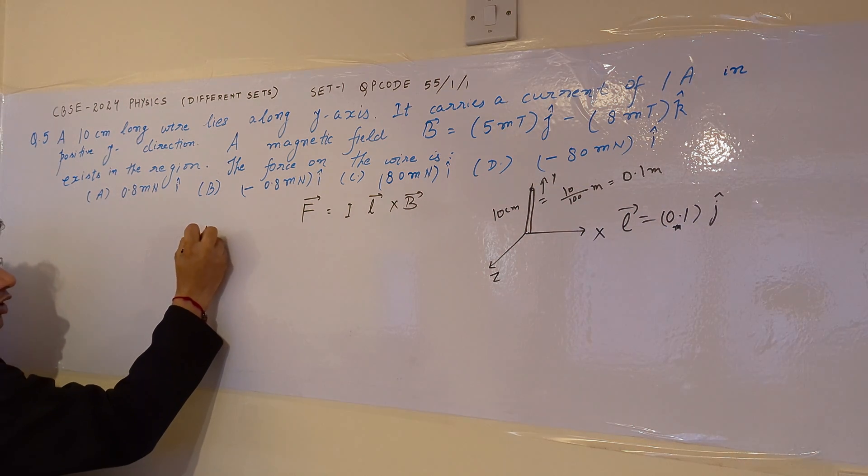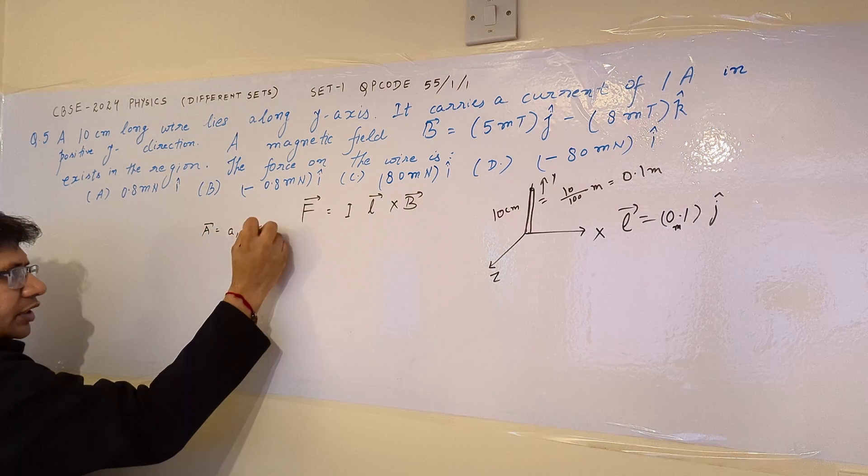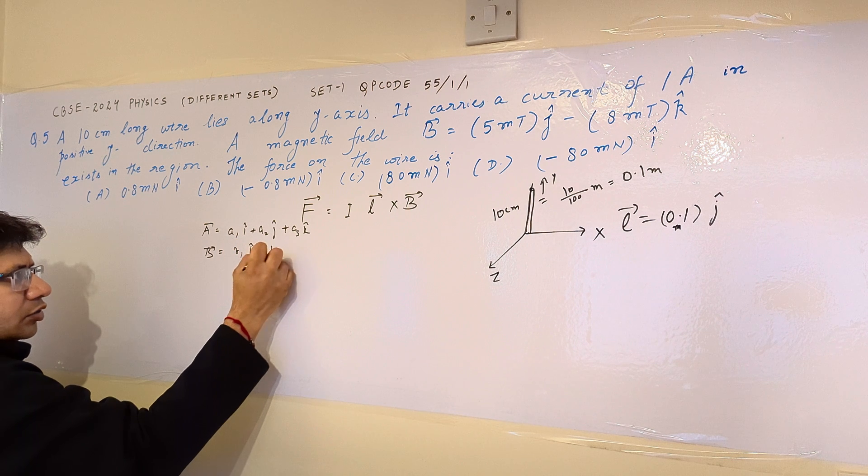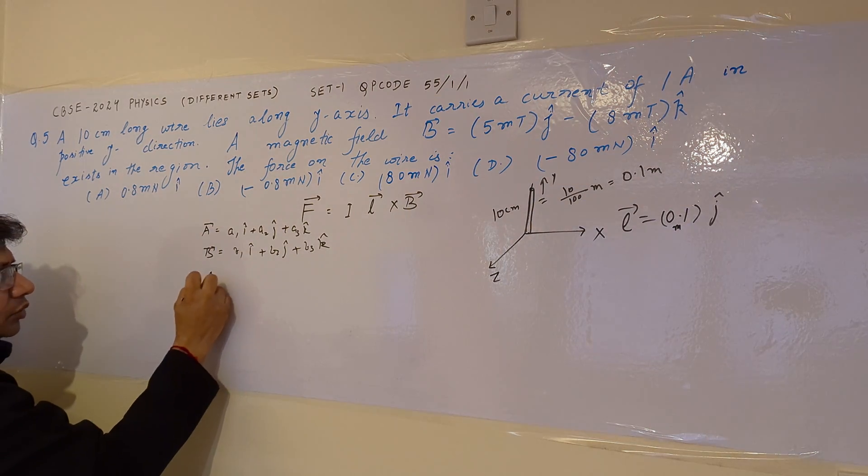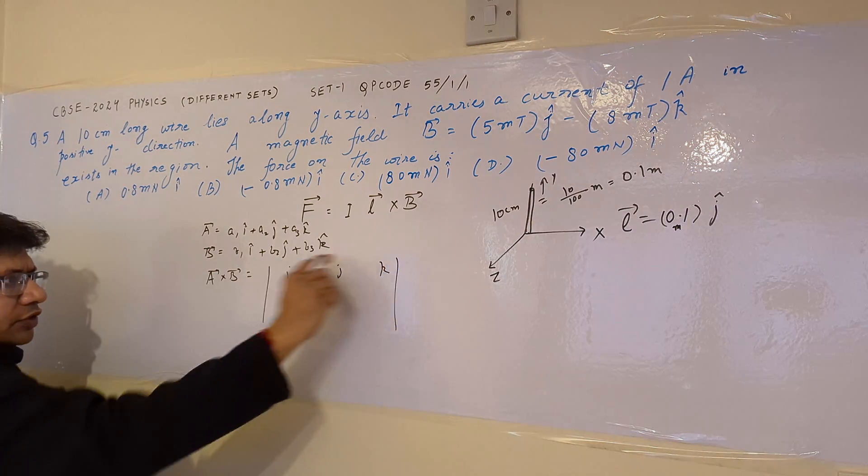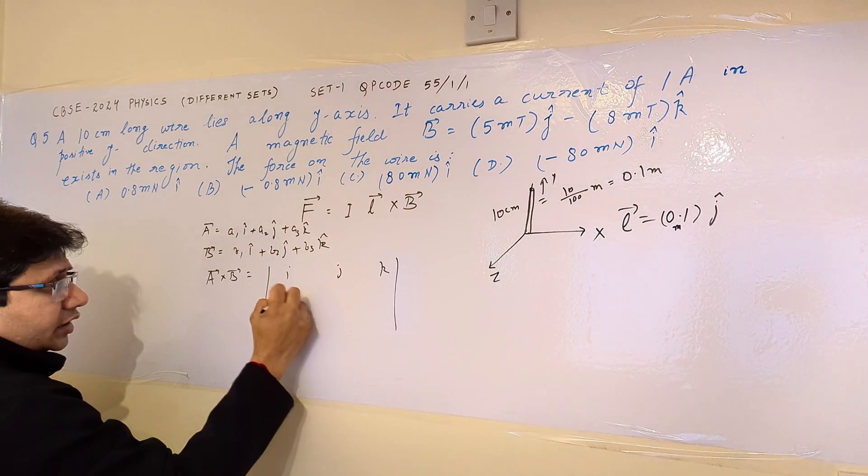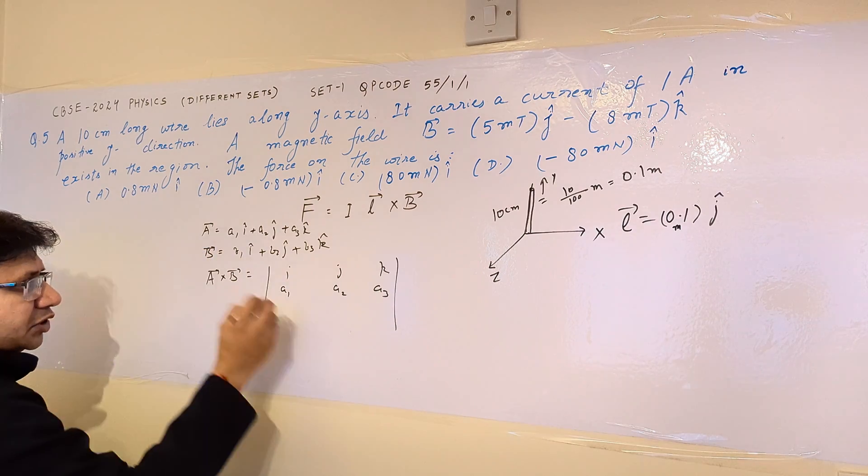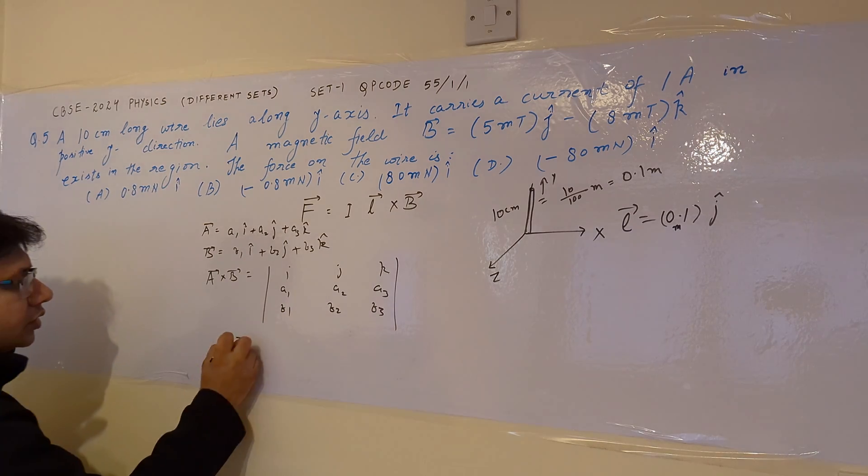Suppose we have two vectors A and B. For example, there is a vector A which is A1 I cap plus A2 J cap plus A3 K cap, and suppose there is another vector B which is B1 I cap plus B2 J cap plus B3 K cap. If we want to calculate the cross product of these two vectors, A cross B is equal to the determinant of I J K in the first row, then the second row consists of vector A coefficients, that is A1, A2, A3, and the third row consists of the coefficients of I J K of vector B, which is B1, B2, B3.